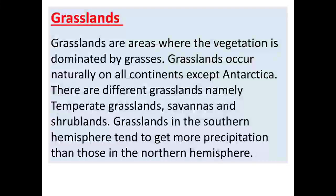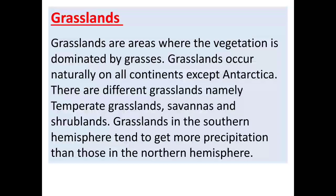Antarctica is a snow-covered area; the entire continent is covered in snow. There are many different types of grasslands in the world, like temperate grasslands, tropical grasslands, savannas, and shrublands. These are all types of grasslands.